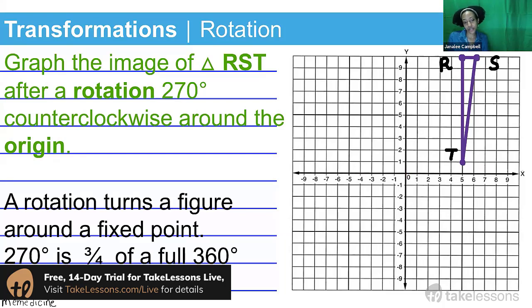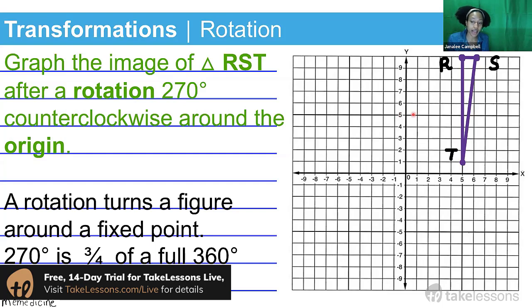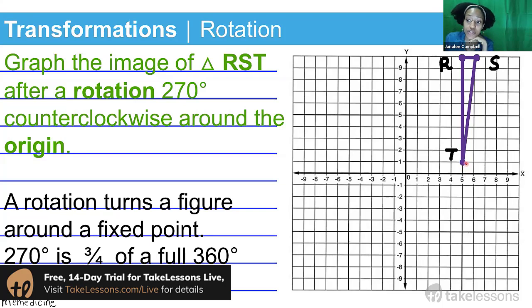270 degrees is three-fourths of a full 360-degree turn. If you were to start at a point and go around in one full revolution, you would have traveled 360 degrees. Each quadrant has an angular measurement of 90 degrees, and 90 times four — there are four quadrants — gives you 360. But here we're only asked to rotate 270 degrees, which is three times 90, or three-fourths of a full turn.